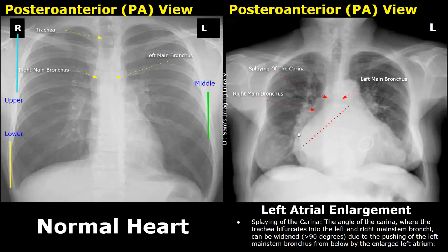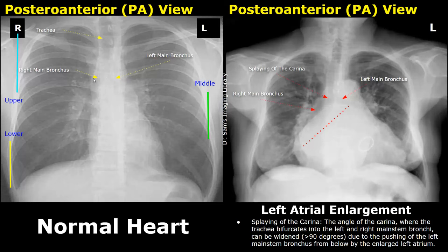Another feature that may be seen in significant left atrial enlargement is the splaying of the carina. The carina is the junction where the trachea bifurcates into right and left main bronchi. Normally the angle should not be more than 90 degrees. The enlarged left atrium pushes the left main bronchus upwards, leading to splaying of the carina.